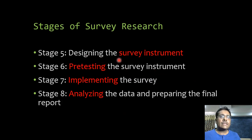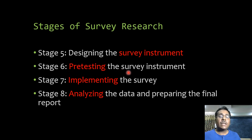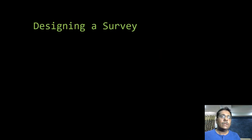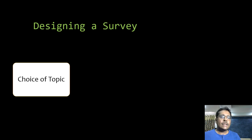Next is designing the survey instrument — generally a questionnaire or an interview schedule — which is the most important part of the survey work. After designing it, we must pre-test the survey instrument because certain things may need to be corrected. Finally, we implement the survey, analyze the data, and prepare the final report. These are the eight stages of survey research.